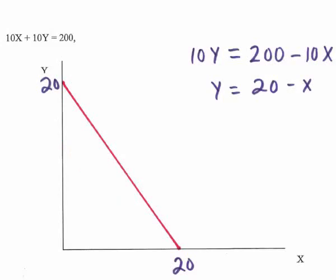We're going to alter the analysis slightly and start by assuming both prices are 10: px equals 10, py equals 10. This gives us the equation 10x plus 10y equals 200, which rewritten with y as the subject is y equals 20 minus x. The budget constraint simplifies to x plus y equals 20, meaning we can purchase 20 units of good x or 20 units of good y with the 200 dollars. The budget constraint is a straight line with a slope of negative 1.